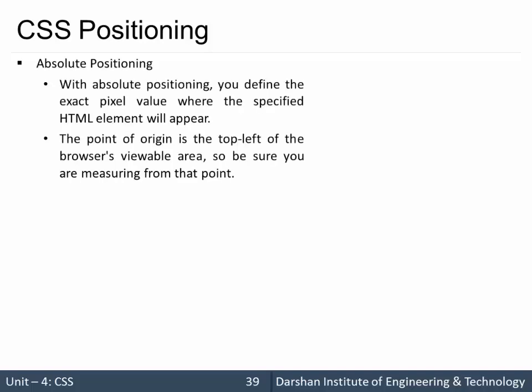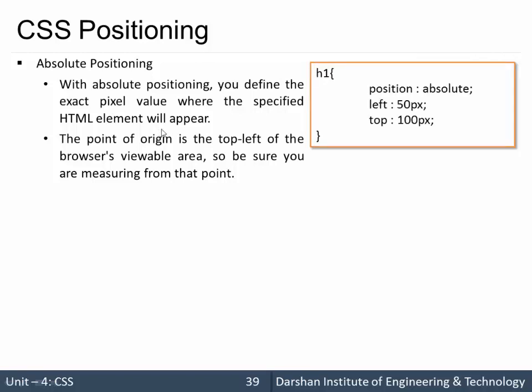The first one is absolute positioning. Using absolute positioning we can specify the exact pixel position for an element — where exactly we want to put our element inside the browser. That position is referenced from the top-left corner of your browser's viewable area. From that point we can specify how far we want to go left and how far we want to go down.